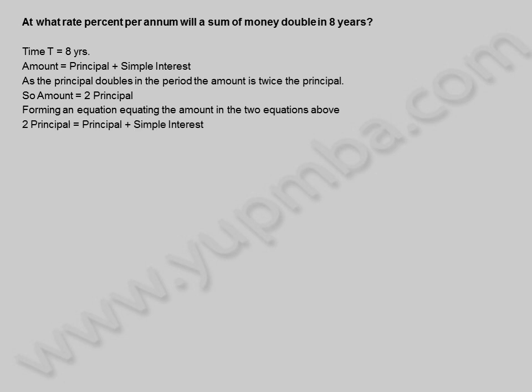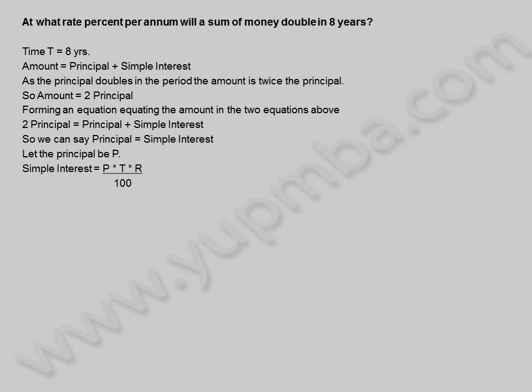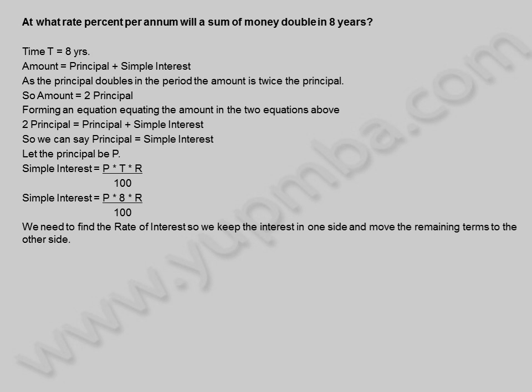Forming an equation: 2P equals P plus simple interest, so principle is equal to simple interest. Let the principle be P. Simple interest is equal to principle into time into rate percent divided by 100, which gives SI equals P into 8 into rate divided by 100. We keep the interest on one side: rate is equal to 100 into simple interest divided by principle into 8.